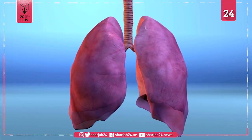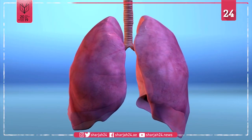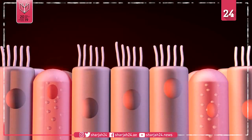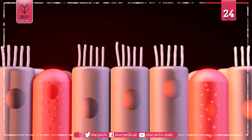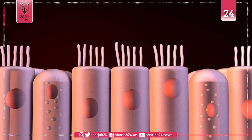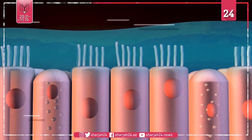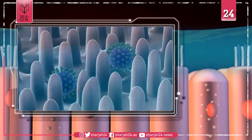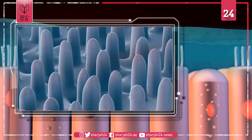Citing Kingston University microbiologist Mark Fielder, Sky News reports that the virus seems to attack two types of lung cells: goblet cells that coat the respiratory tract with mucus, and ciliated cells that usually filter out pathogens.